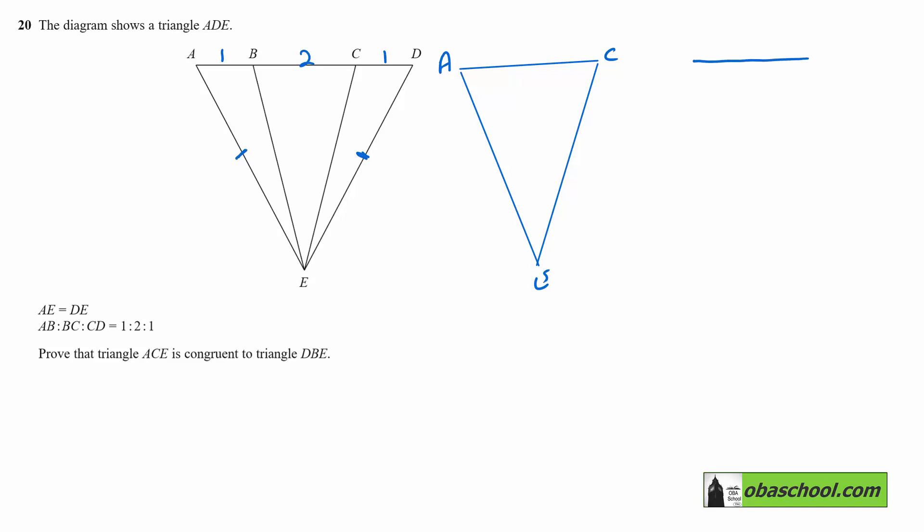So D to B to E, like so. It doesn't have to be accurate. Just draw them separately. And then mark on the things that we've already found out.